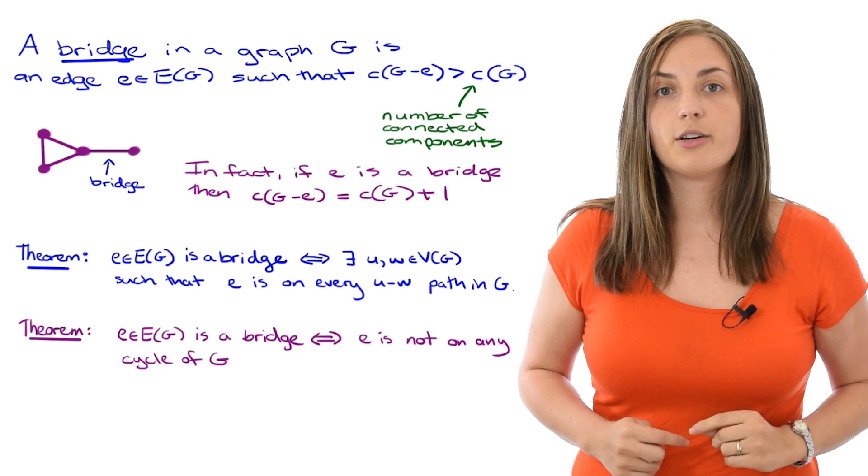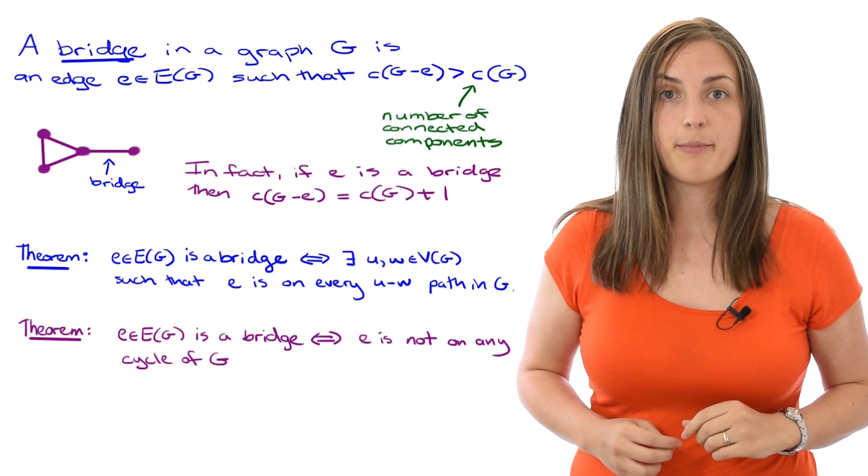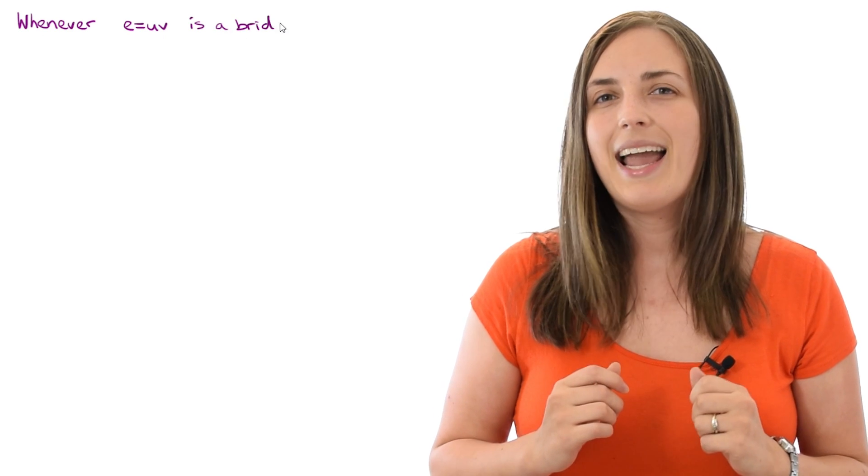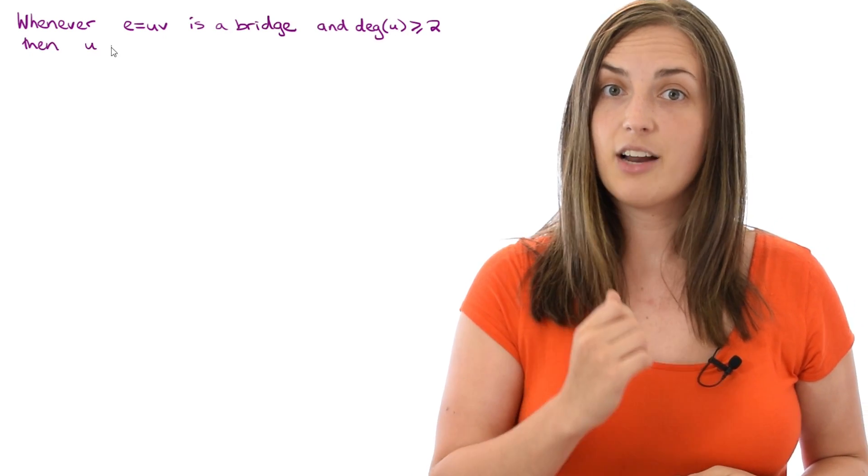We've actually seen this theorem proved in a previous video. You can check the links in the description below for that proof. An important link between bridges and cut vertices is that whenever you have a bridge edge u v and the degree of u is at least 2, then u happens to be a cut vertex.